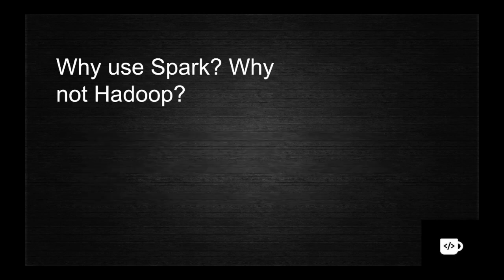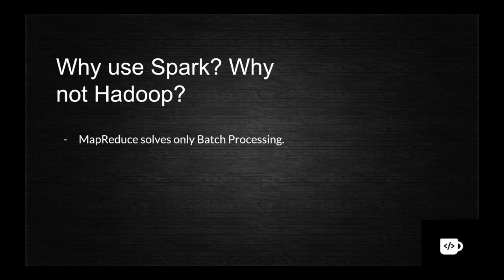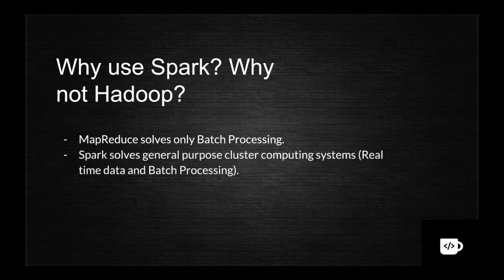So why use Spark? Why not Hadoop? MapReduce solves only the batch processing problem, however Spark handles real-time data problems as well. Spark is almost ten times faster than Hadoop - that is what they claim and what the stats reveal. Spark solves the general purpose computing problem covering both real-time and batch processing, whereas Hadoop does only batch processing. Also, the number of lines of code you write in Spark is less compared to Hadoop.